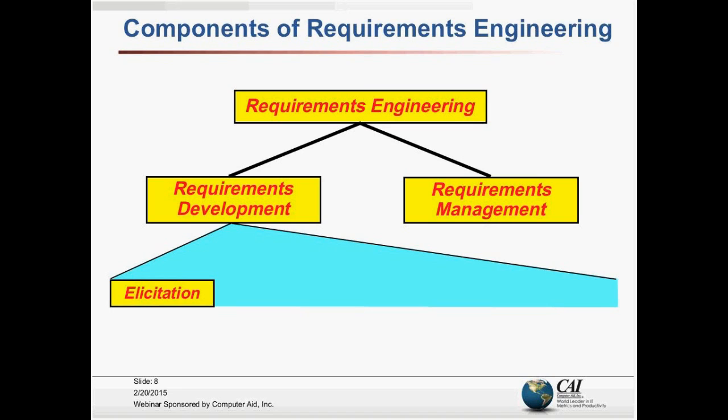There are four subcategories within Requirements Development. The first is elicitation — all the things we do to get requirements. Sometimes people talk about requirements gathering, and I don't like to use that term because it conveys an impression of walking around with a basket and collecting them. Elicitation is a lot more than gathering; it also involves discovering, inventing, and deducing requirements. But we have to have something to work with, so we start with elicitation.